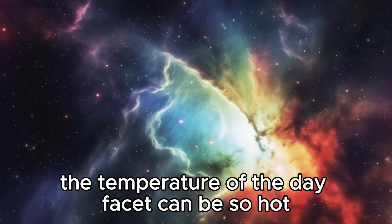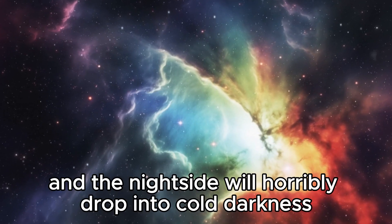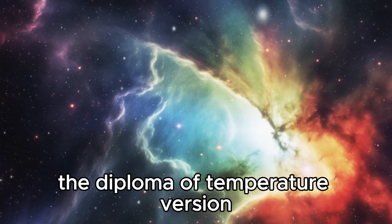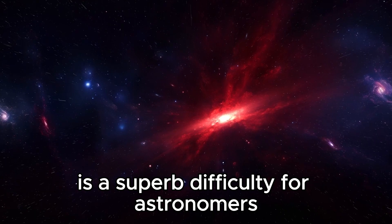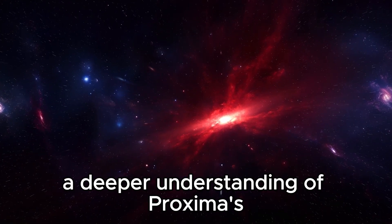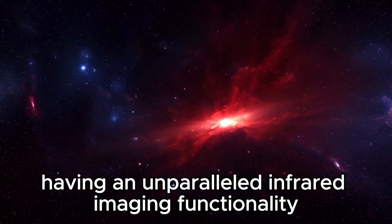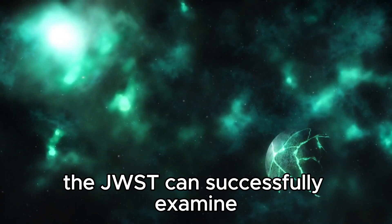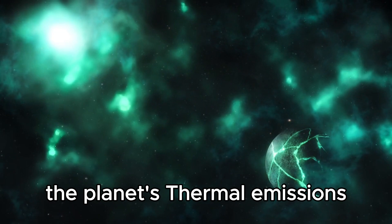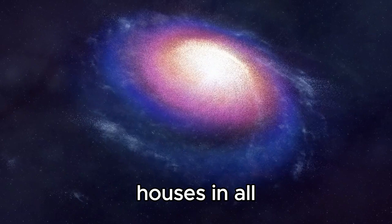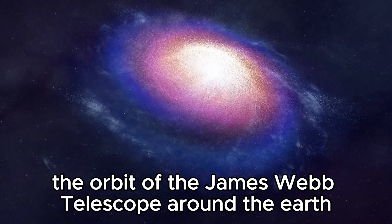If there is no atmosphere on Proxima B, the difference between its day and night periods could be vast and far between. If there may be no moderating effect of atmospheric gases in oceans, the temperature of the day side can be so hot like a black body, and the night side will horribly drop into cold darkness.